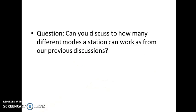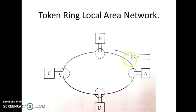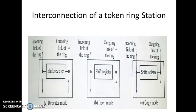A question: in how many different modes can a station work? We had four stations — A, B, C, and D. Station A was generating the frame, Station D was copying the data, and Stations B and C were simply regenerating the frame without copying it. So a particular station can act in three modes: repeater mode, insert mode, and copy mode.